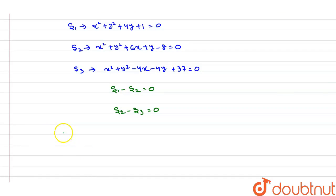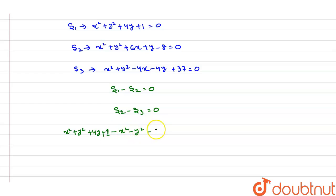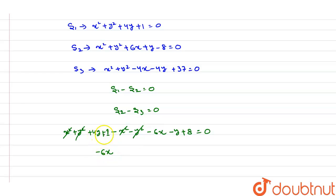For S1 − S2 = 0: subtracting S2 from S1, the x² and y² terms cancel. We get −6x + (4y − y) + (1 + 8) = 0, which simplifies to −6x + 3y + 9 = 0. This is equation 1.